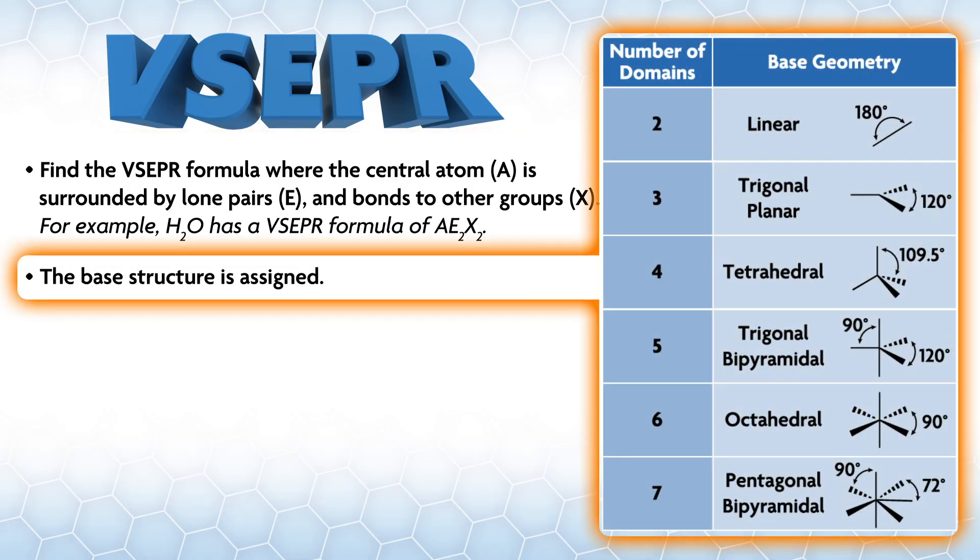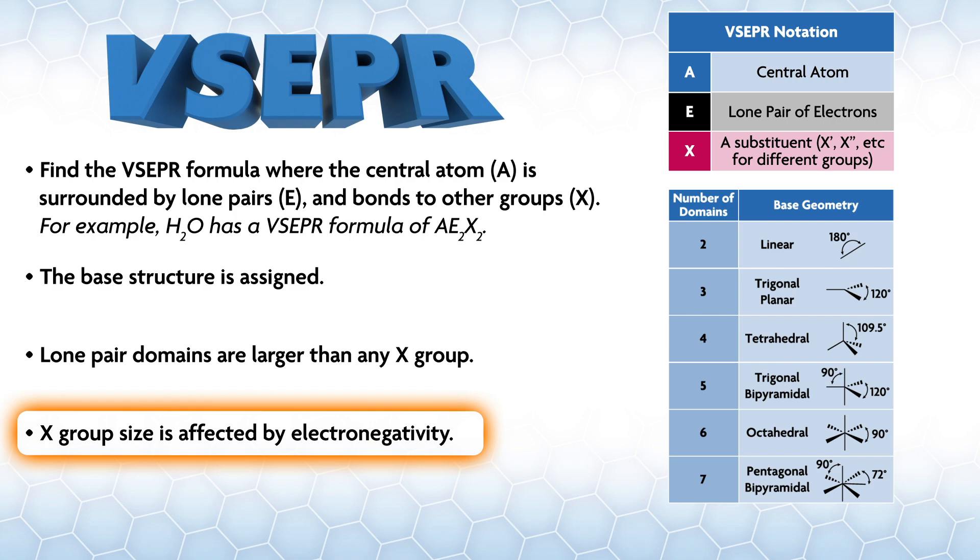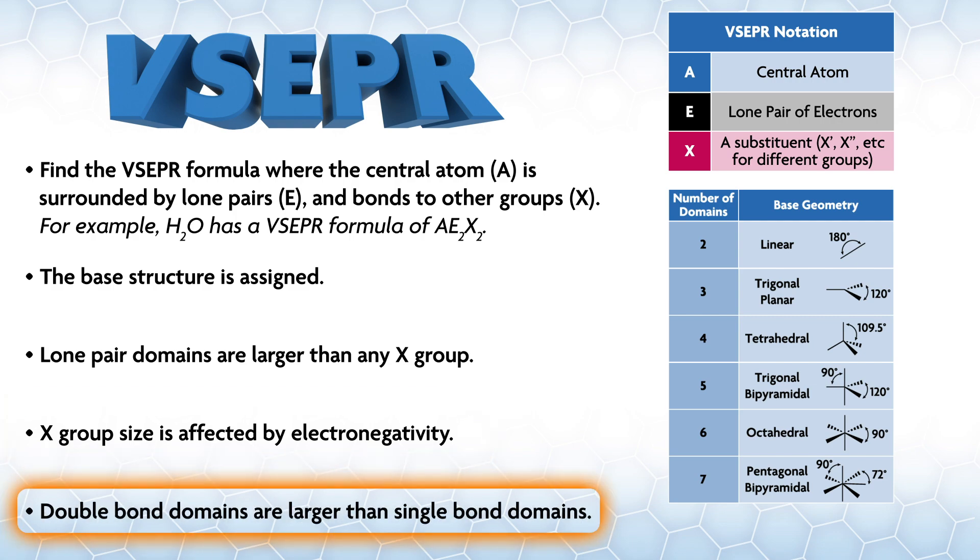For example, H2O has VSEPR formula of AE2X2. The base structure is assigned: two domains equals linear, three domains equals trigonal planar, four domains equals tetrahedral, five domains equals trigonal bipyramidal, six domains equals octahedral, and seven domains equals pentagonal bipyramidal. Lone pair domains are larger than any X group. X group size is affected by electronegativity. Double bond domains are larger than single bond domains. These points will help you assign the vast majority of structures.